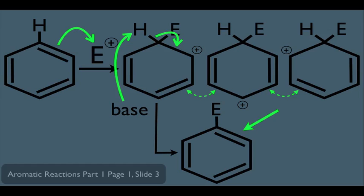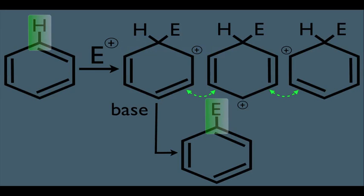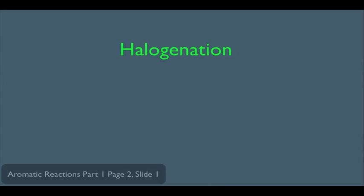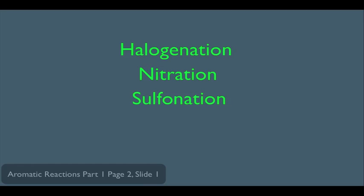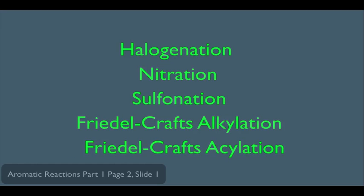In the process, we replace a hydrogen on the ring with an electrophile. Understanding this big picture is important because all the reactions in this section follow this general mechanism. We're going to see that halogenation of a benzene ring follows this mechanism, as does nitration, sulfonation, Friedel-Crafts alkylation, and Friedel-Crafts acylation. All of these reactions follow that same general mechanism.